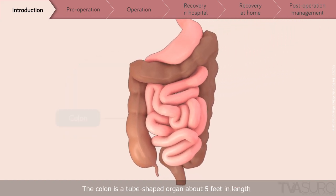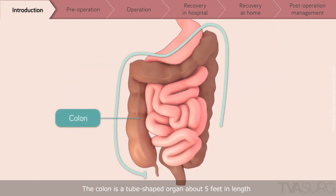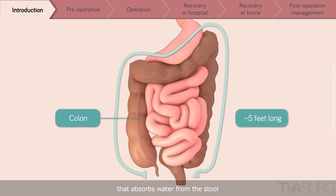The ileocecal valve is responsible for controlling the emptying of the contents of the terminal ileum into the colon. The colon is a tube-shaped organ about 5 feet in length that absorbs water from the stool to change its consistency from liquid to solid stool.